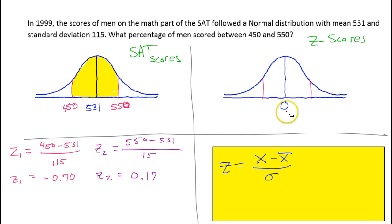So, round carefully. Now we have found these two z-scores. So, the upper z-score is 0.17. This is my z-score graph, so this is where I will put my z-scores. And my lower z-score was negative 0.70.